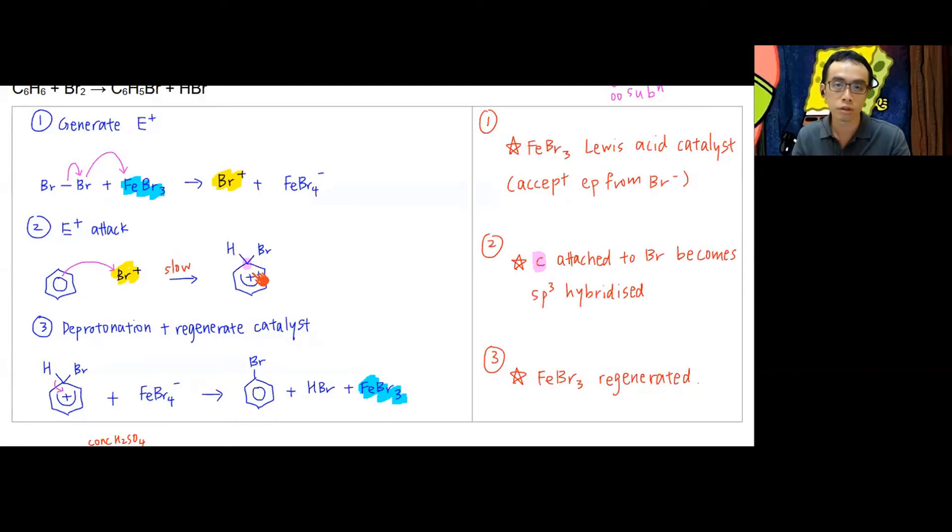The delocalization is gone. It breaks the resonance stability; you lose the resonance stability. We also have a positive charge at the center, which makes this guy very unstable. Benzene absolutely hates this configuration, so you want to kick out H+ as much as possible so that it can restore the delocalized pi system.